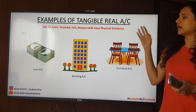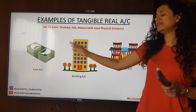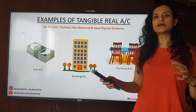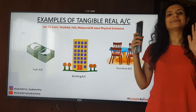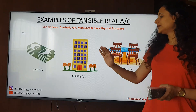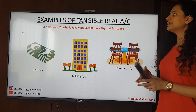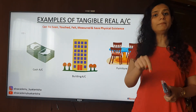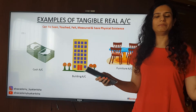In tangible real accounts, we have everything that can be seen, touched, felt, measured and has physical existence. For example, cash account — very important — cash account versus bank account causes a lot of confusion. Bank account is a personal account and cash account is a real account. That differentiation you need to understand. Then we have building account and furniture account. These are all tangible real accounts. If you have additional examples, please put them in the comment box.